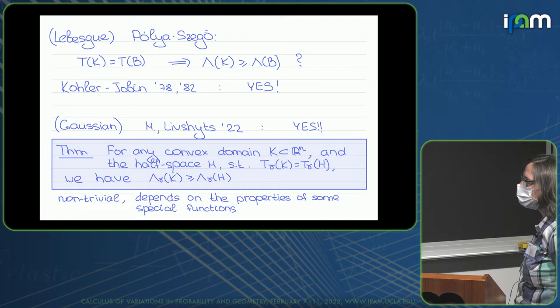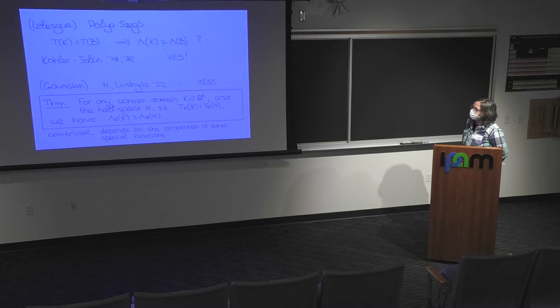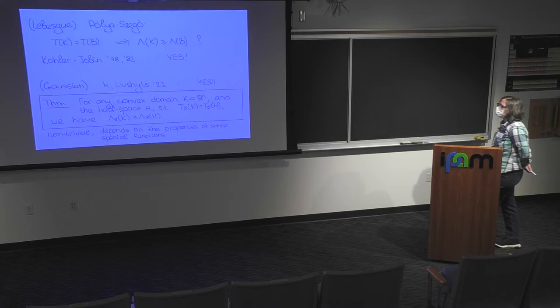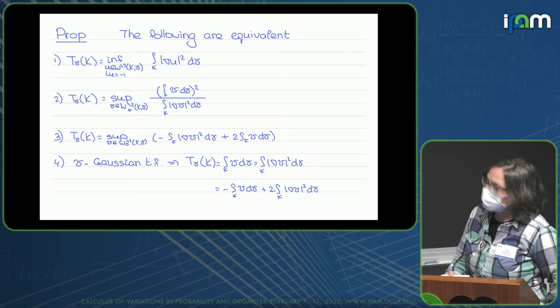We succeeded in giving a positive answer to this question for Gaussian measure. We proved that for any convex domain K and the half-space H with the same torsional rigidity, we have that the principal frequency is minimized for the half-space. The solution, however, is not trivial. We need to apply special properties of functions related to the Ehrhard rearrangements holding for Gaussian measure.